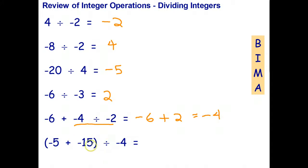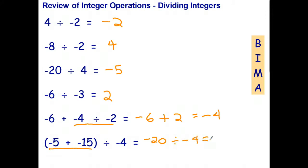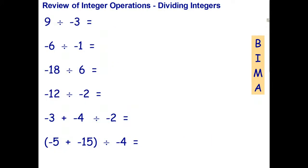For the second question, I do the operation in brackets first — so I do the addition before the division. Negative five plus negative fifteen: adding two bills together gives a bigger bill, so that becomes negative twenty. Then negative twenty divided by negative four — a negative divided by a negative is a positive. Pause the video, try the six questions on the next page, and we'll check answers shortly.